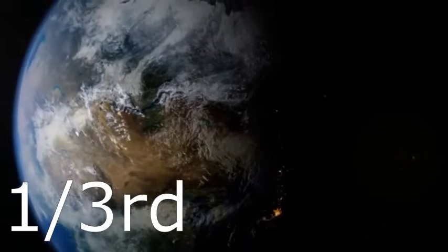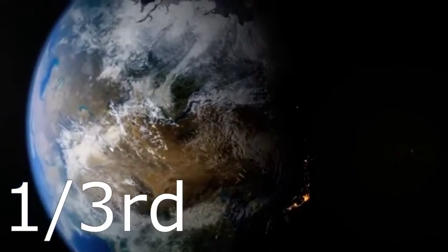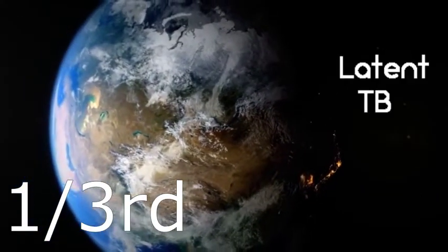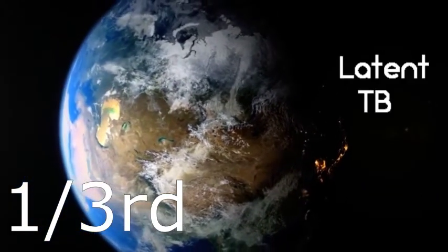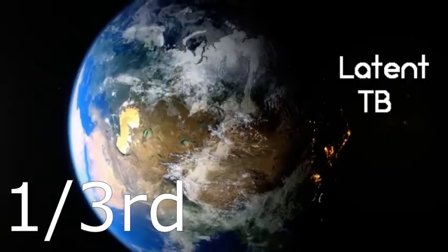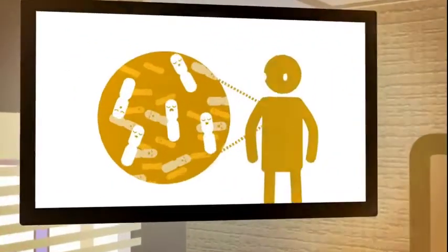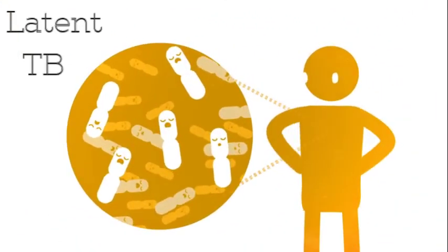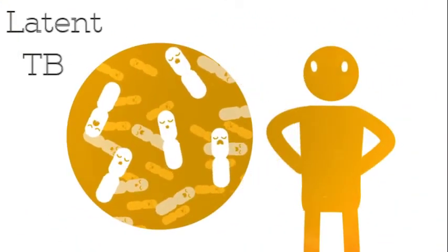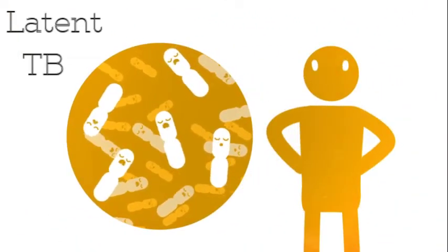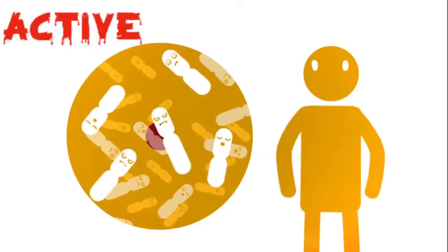One third of the world's population has a latent variety of tuberculosis, which means that the germs are asleep in the body. But later on in life, this latent infection may become an active disease.